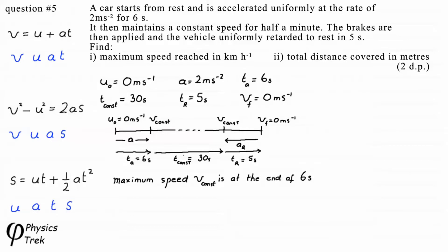Now we have U, a, and t, and are required to work out V, so we will be using v = u + at. So we can write V_const equals U₀ plus a times tₐ. Putting numbers in: U₀ is 0, a is 2, tₐ is 6. So V_const equals 2 times 6, which is 12 m/s.